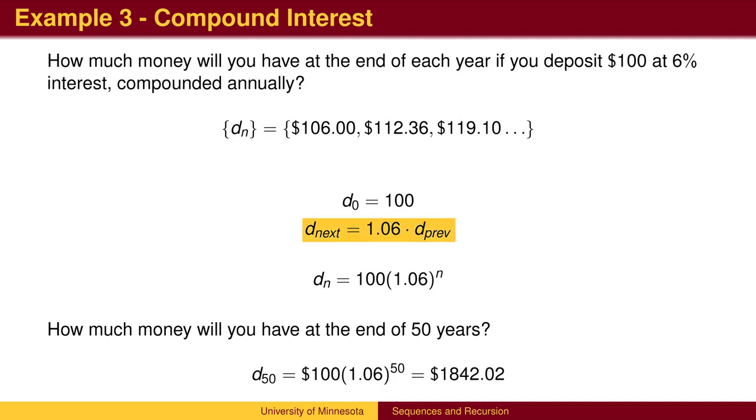In the recursive definition, we would need to repeatedly multiply by 1.06 a total of 50 times. With the explicit definition, we can get the answer with 1 calculation.